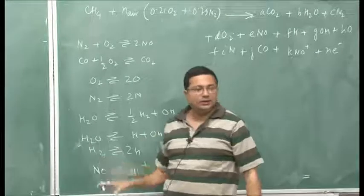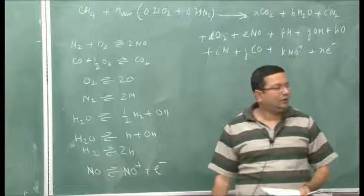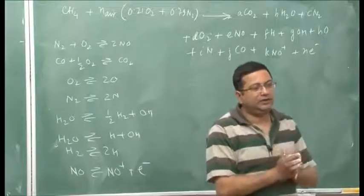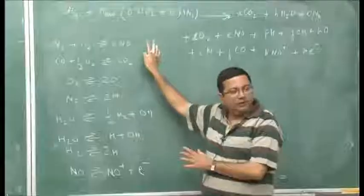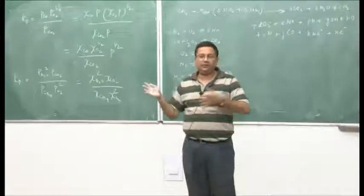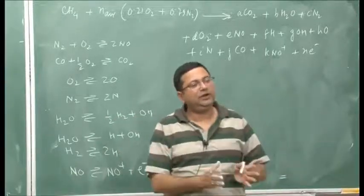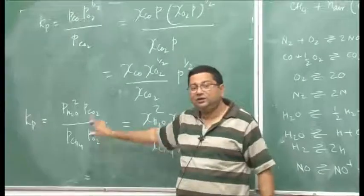This brings us to the end of the chemistry discussion. To summarize: we have looked at chemical equilibrium and defined properties like Kp and delta G naught. If we know what species appear in the product side, we can form equilibrium reactions, obtain Kp values from tables, and get the additional equations needed to close complex problems where the degree of reaction freedom is greater than 1.